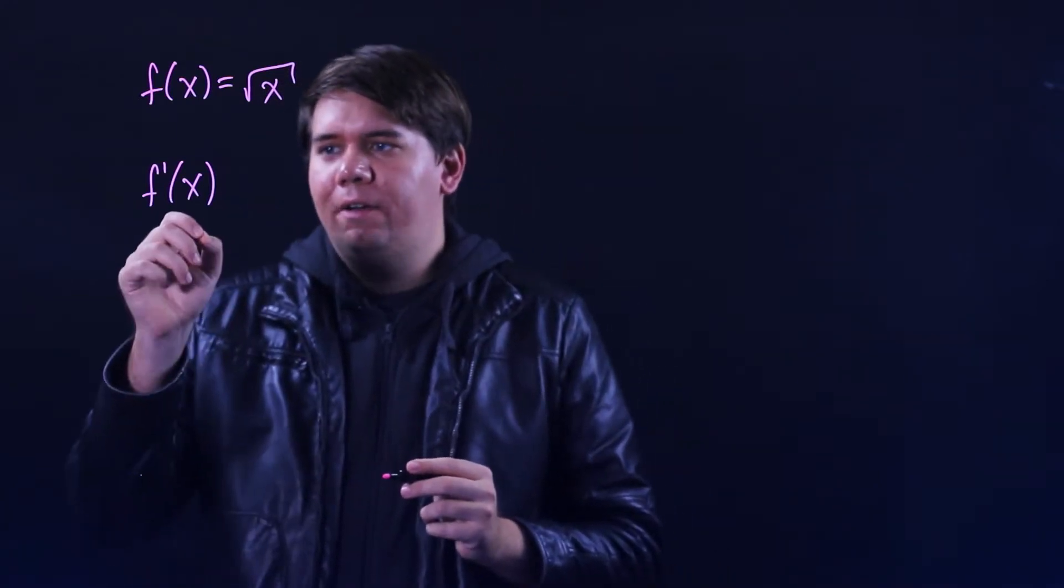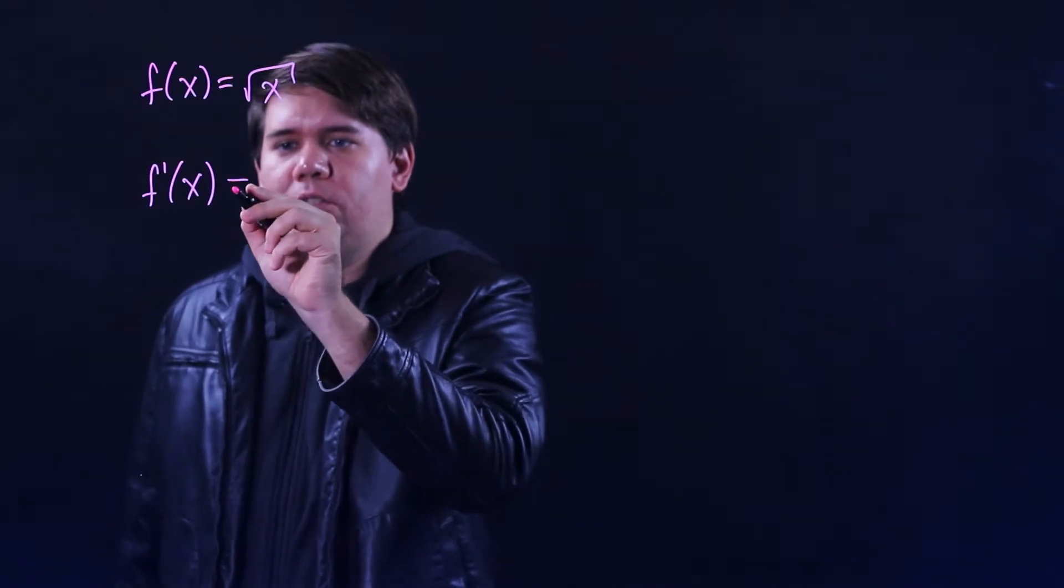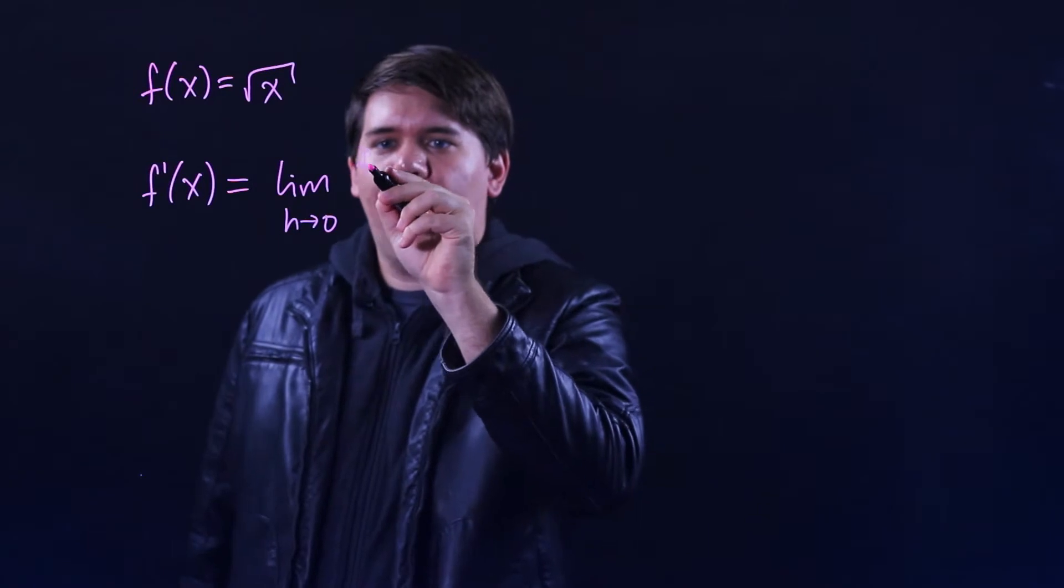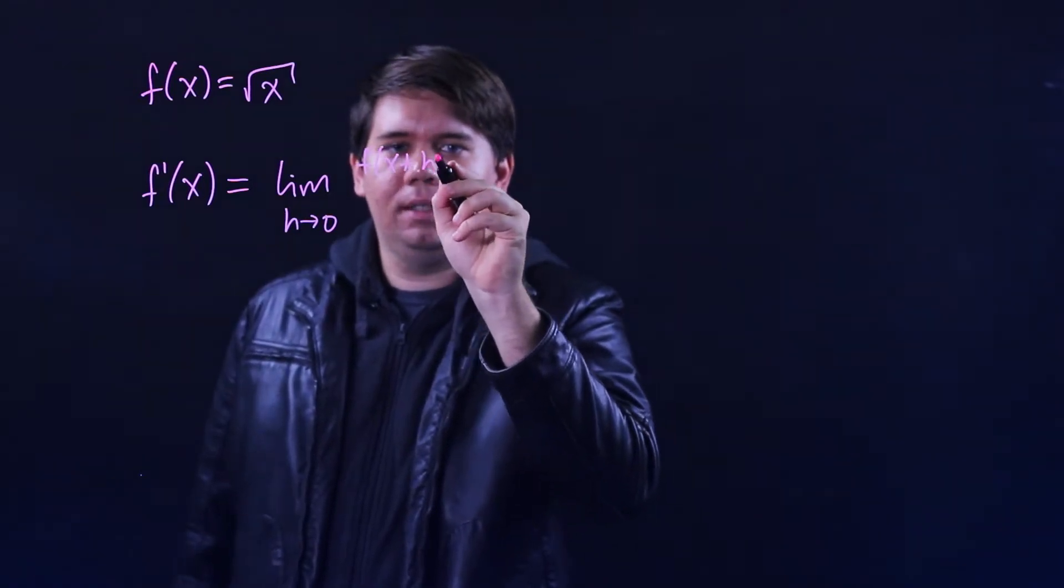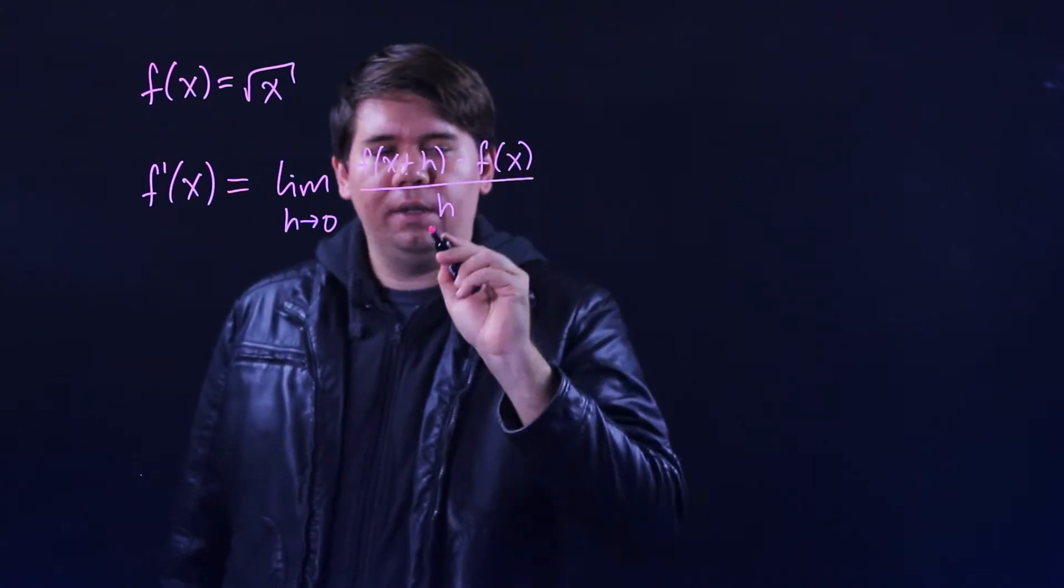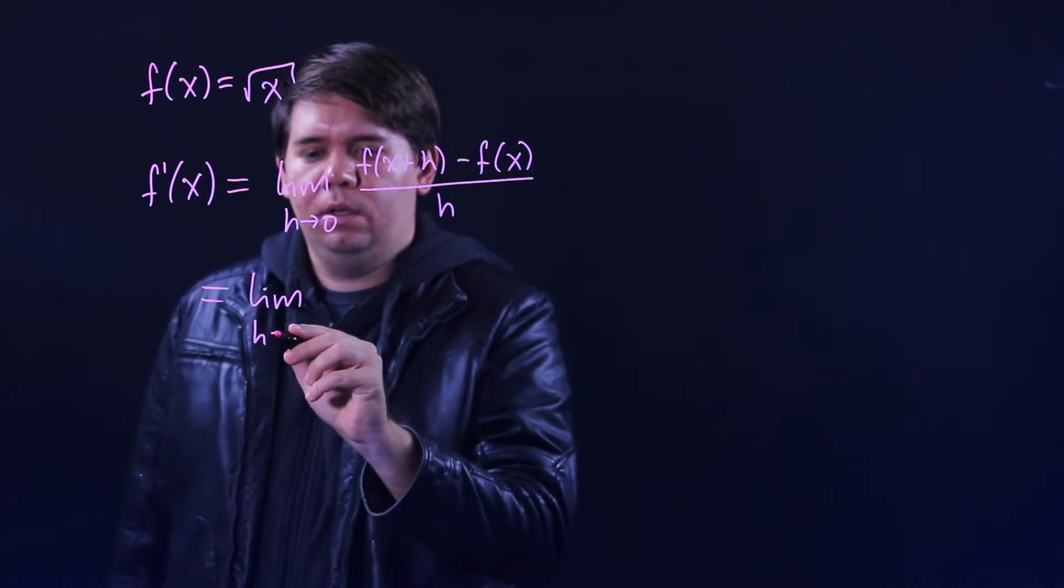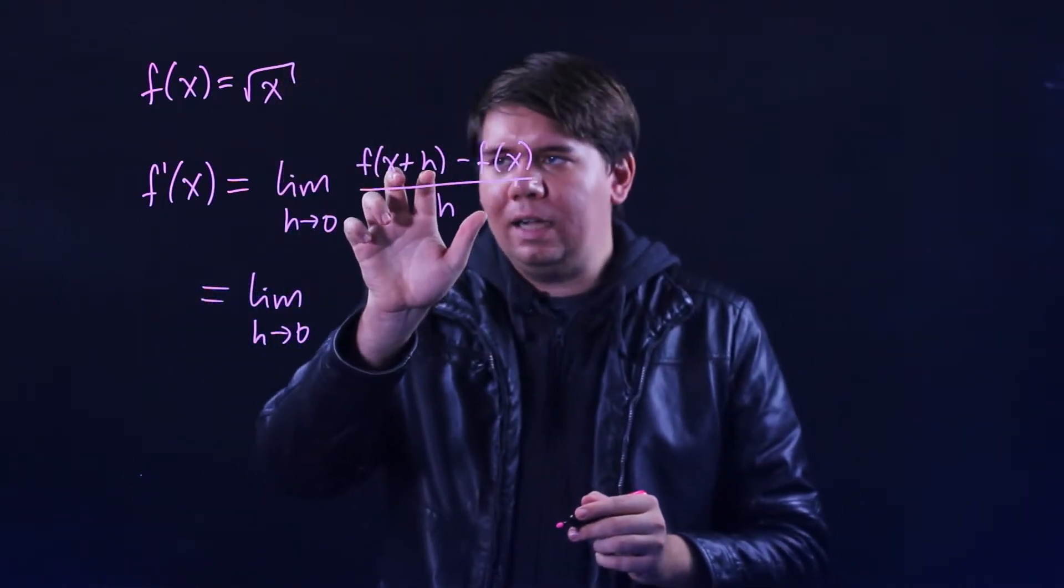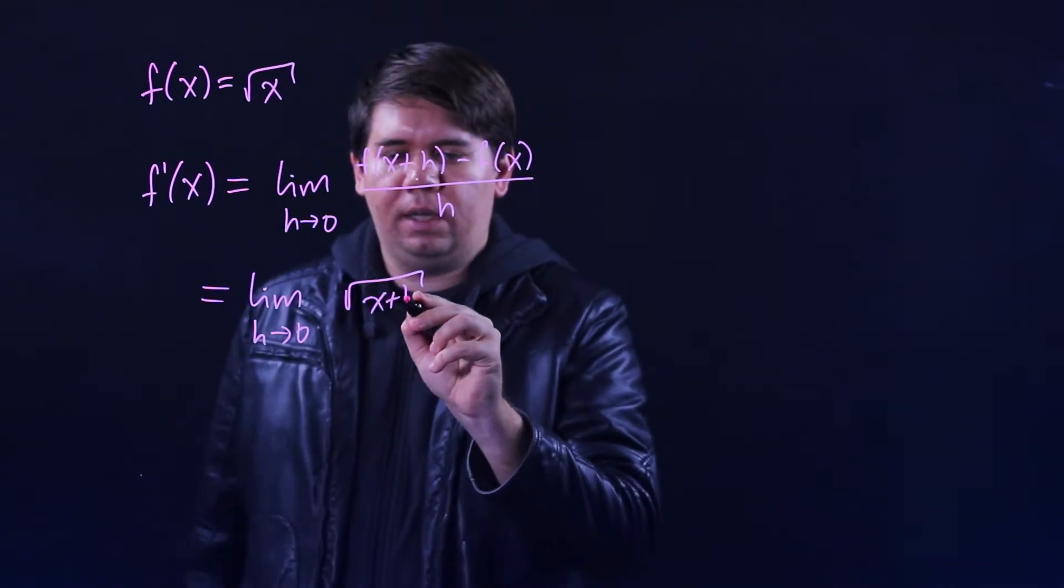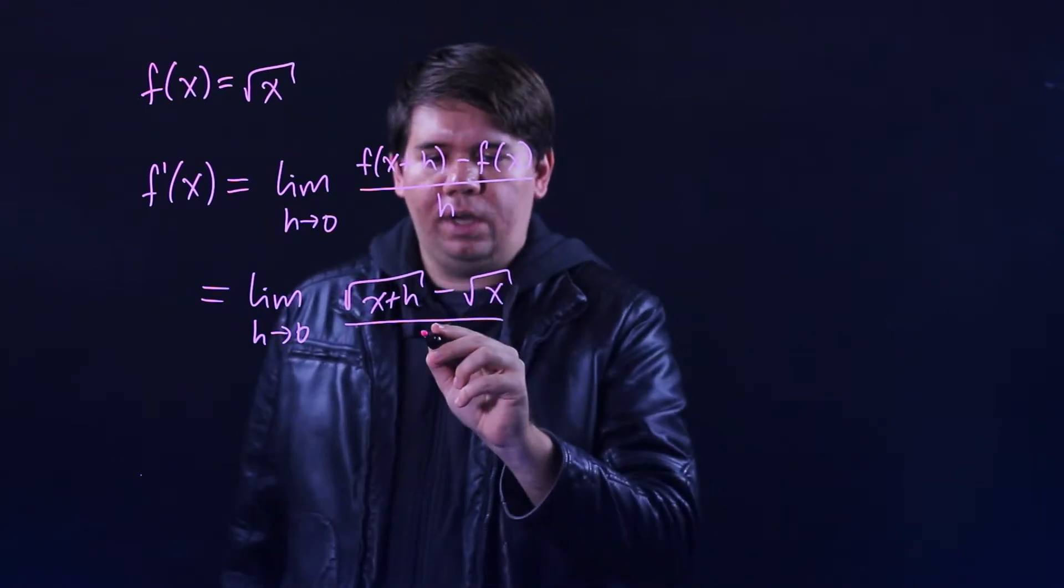What is the derivative of f at any given point x? To do this we'll calculate the limit as h goes to 0 of f of x plus h minus f of x all over h. This comes out to be the square root of x plus h minus the square root of x all over h.